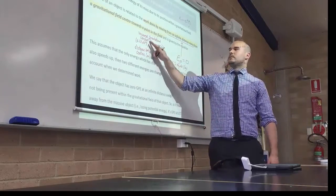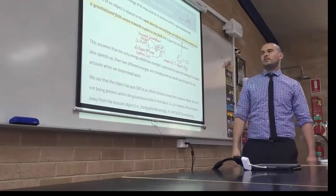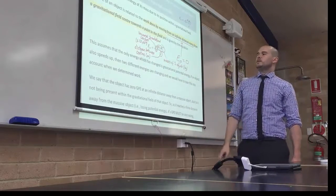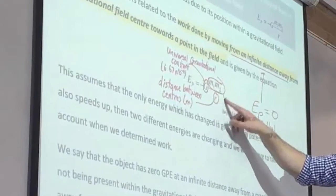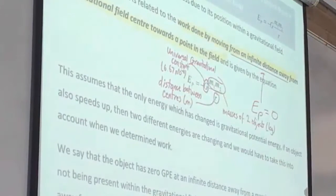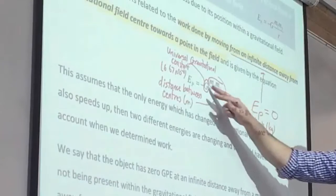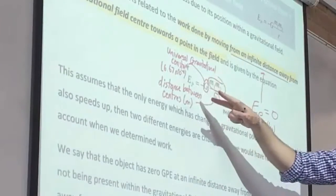So saying there that the potential energy, the energy stored within an object due to its position, depends on these three things which can change. So the mass of the small object, mass of the big object, the distance between them, and this universal gravitational constant which is on your data sheet.